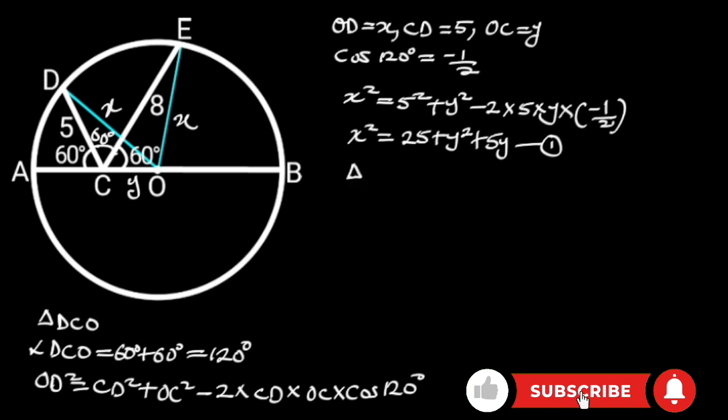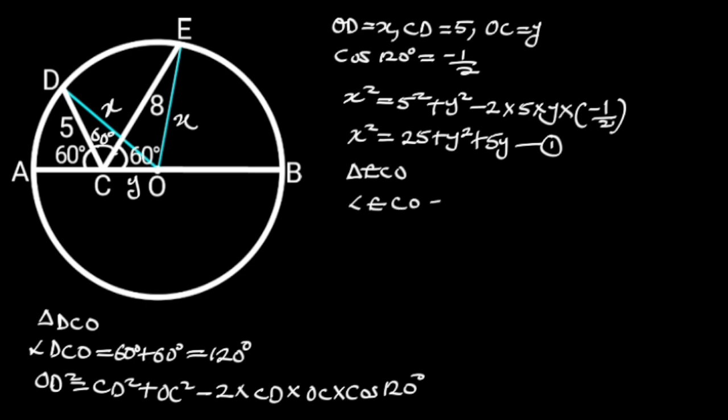Next, let's focus on triangle ECO. In triangle ECO, angle ECO is equal to 60 degrees. Also, from cosine rule,